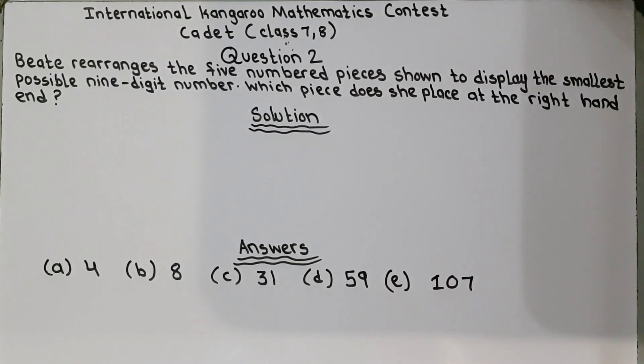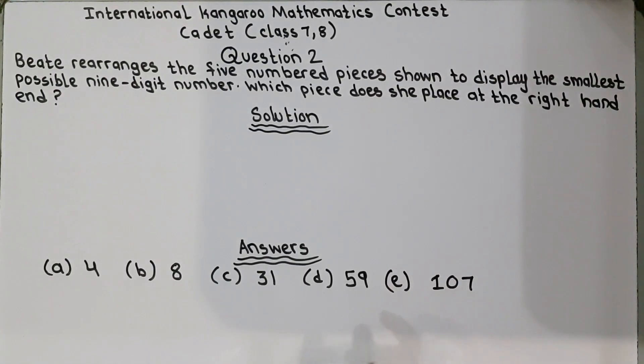So we will try to solve it. Now we will look for the smallest digit. We have to display the smallest 9-digit number, so we will do it by ourselves. First, we will look for the smallest number because the first number shows whether the number is greater or small.